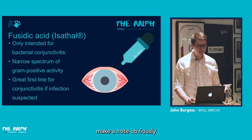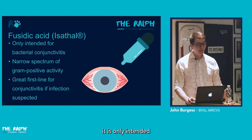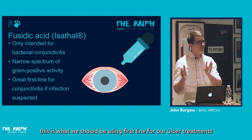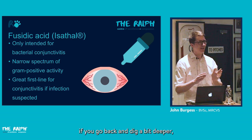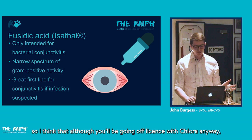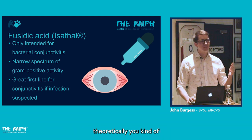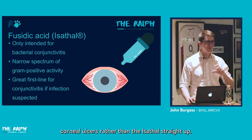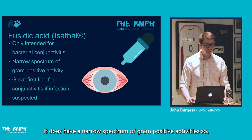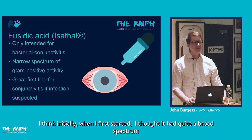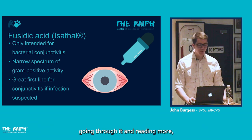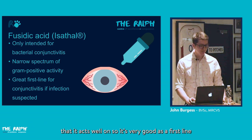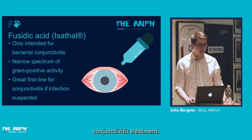Regarding Isothyl, the data sheet indicates it is only intended for bacterial conjunctivitis — not corneal ulcers. Although you'll be going off-license with chloramphenicol for ulcers, you'd technically be doing the same with Isothyl. It's also worth noting that Isothyl has a narrow gram-positive spectrum, acting mainly on Staph and Strep within the conjunctival fornix, making it a good first-line conjunctivitis treatment but not ideal for corneal ulcers.